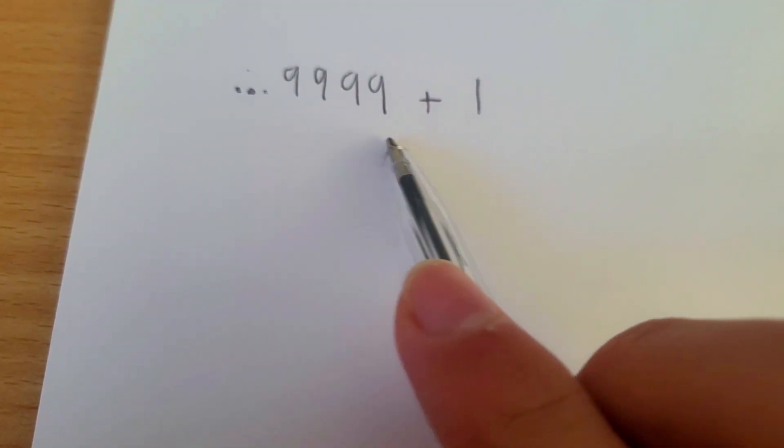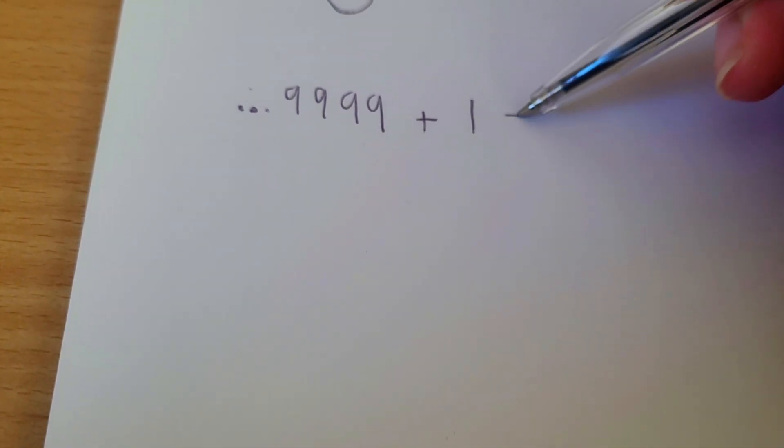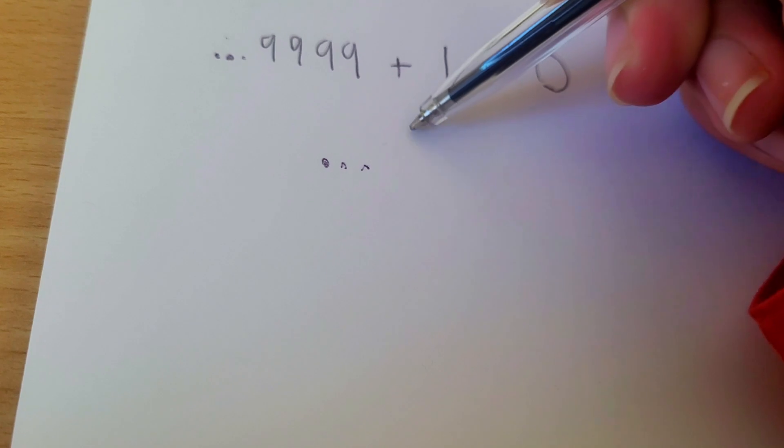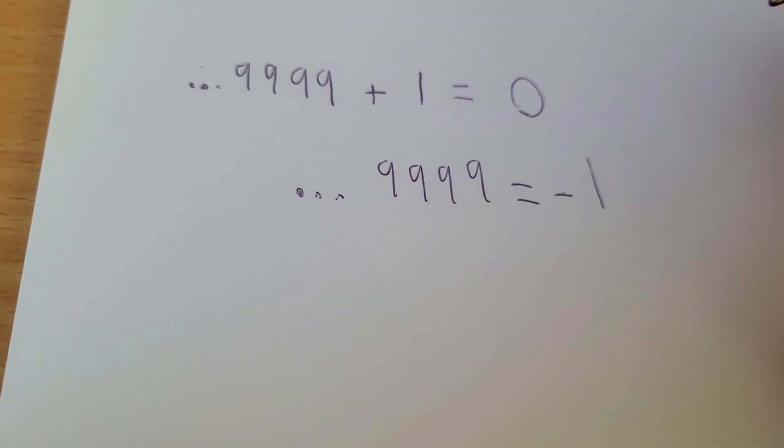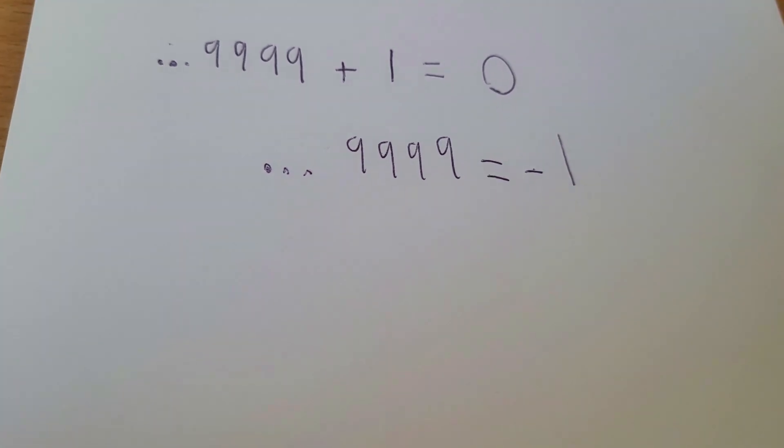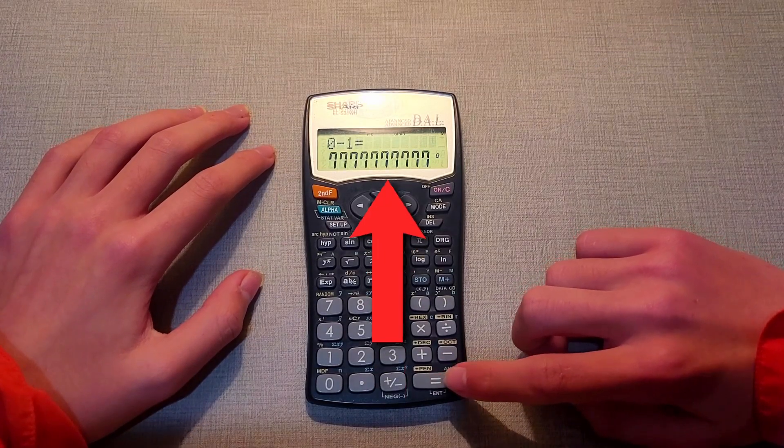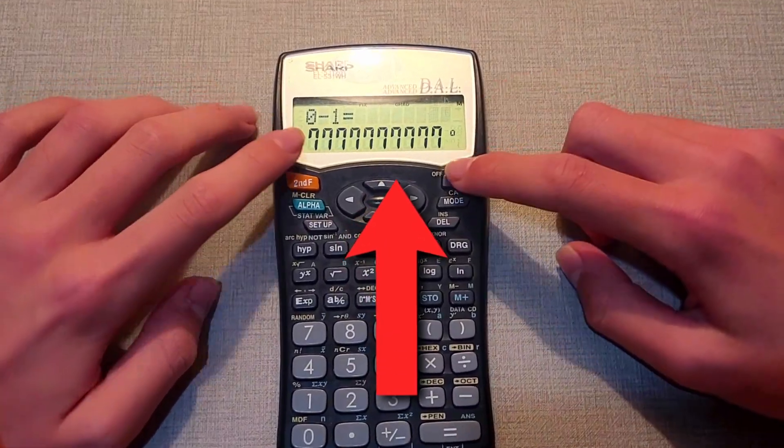This means that the addition of a repeating 9 with 1 is equal to 0, and by taking away the 1, the value of this infinite 9 is actually somehow negative 1. So using this logic, the weird values are explained as the repeating digit is always 1 less than the base, meaning it does technically equal negative 1.